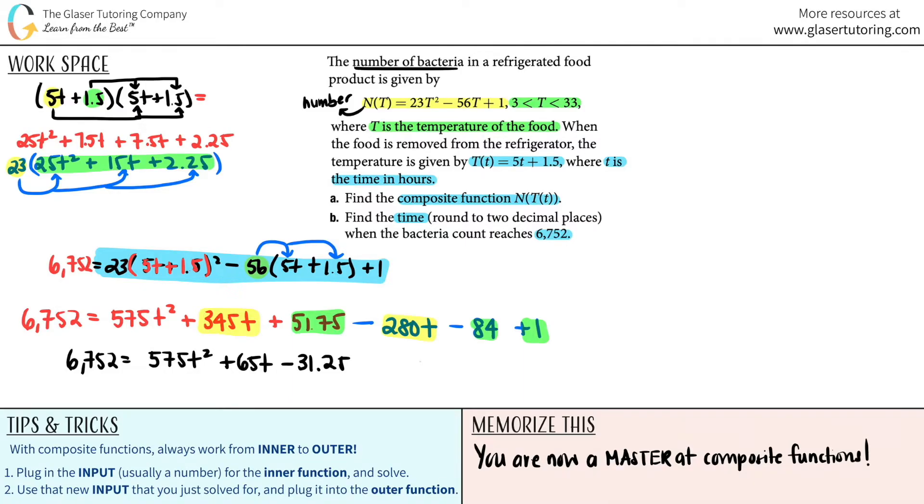Now we're starting to get into quadratic with a t² and a t value. So I know I have to do the quadratic formula, so I have to get rid of this. I have to minus the 6752 on both sides. I'm going to put it up here. Remember, whenever you're doing the quadratic formula, you need to have it be zero equals. So zero equals 575t² + 65t - 6783.25.